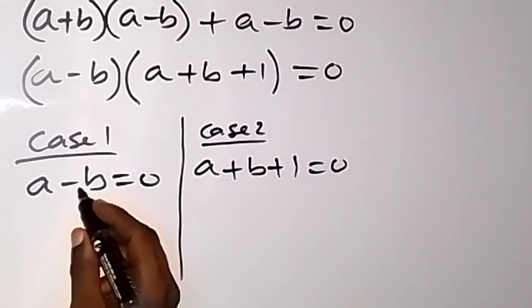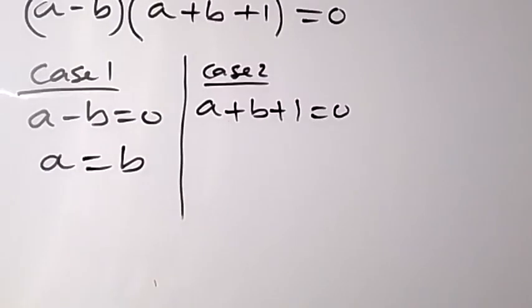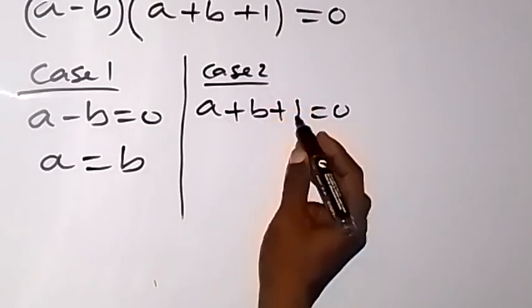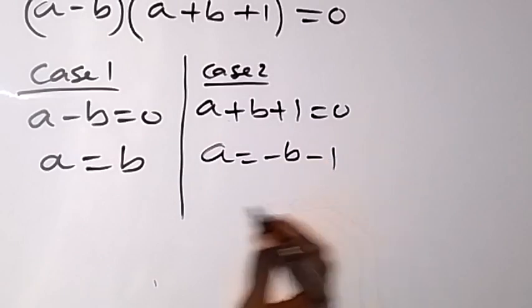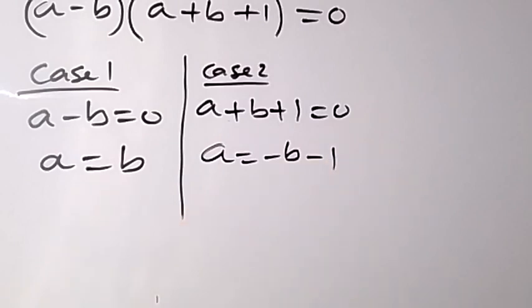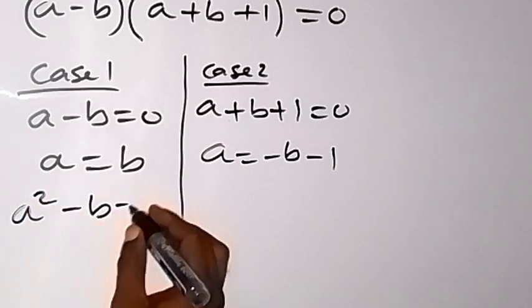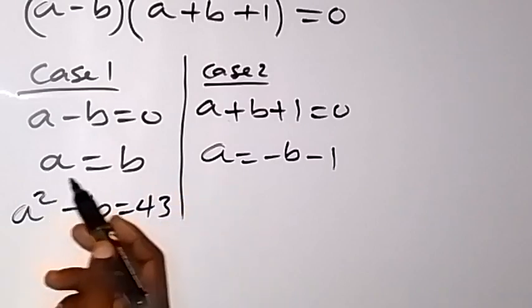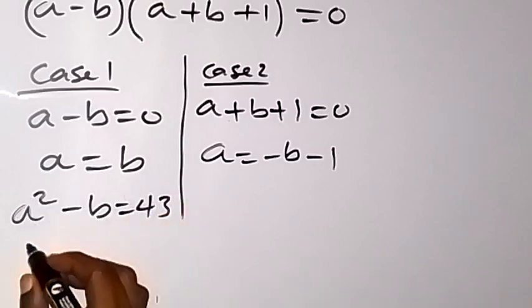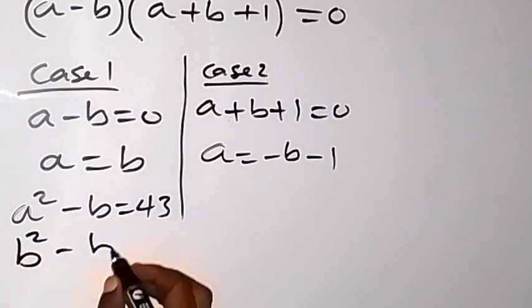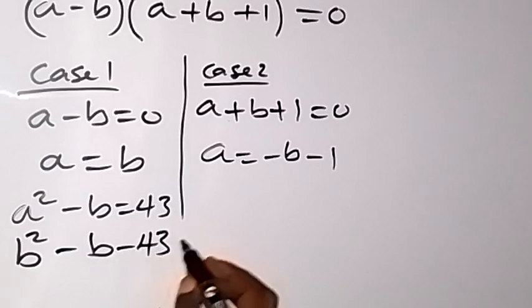From case 1, we have a equals b. From case 2, we have a equals minus b minus 1. Let's solve case 1 first. Bringing equation 1 down: a squared minus b equals 43. Since a equals b, we replace a with b, giving b squared minus b minus 43 equals 0.